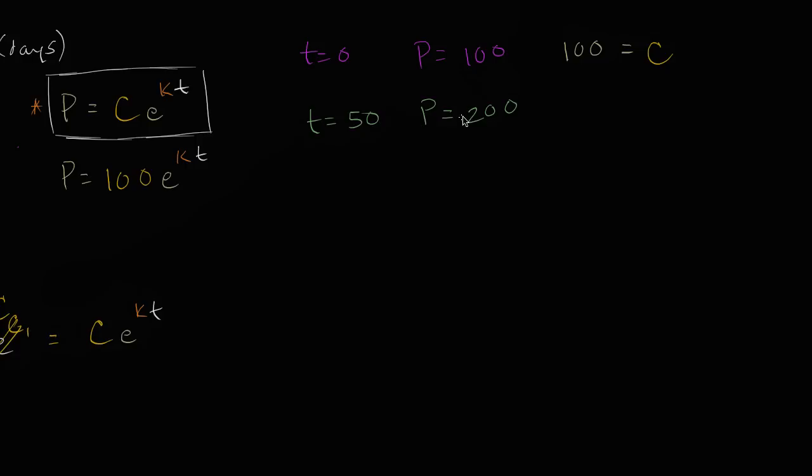And now we can use the second piece of information. Our population is 200 when time is equal to 50, after 50 days. So 200 is equal to 100 E to the K times 50. T is now 50.